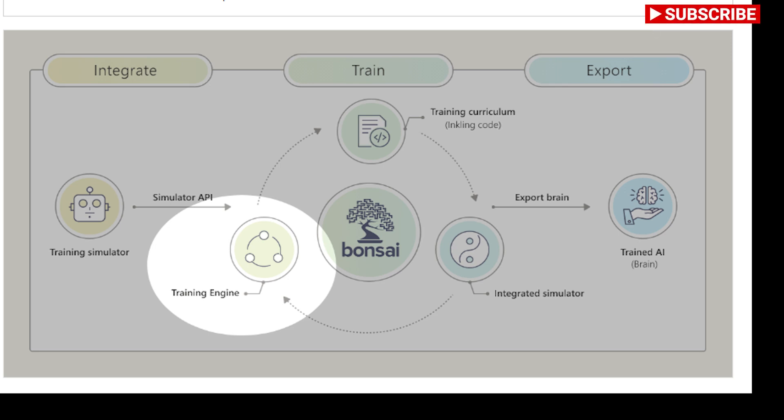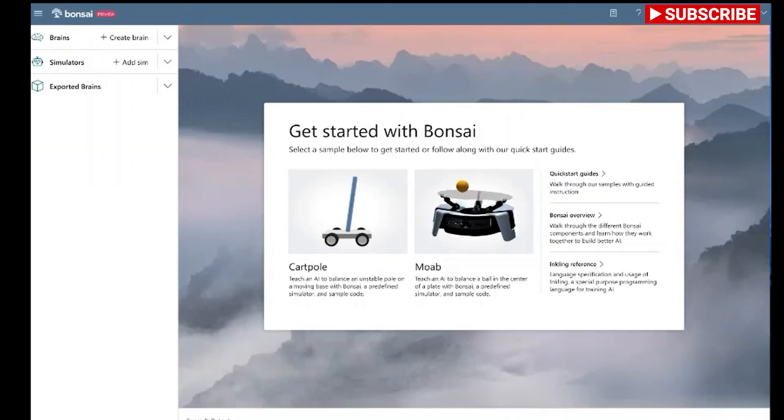Today I am going to talk about Microsoft Bonsai Project. This is Farhana and welcome back to my channel. Microsoft Project Bonsai is a low-code AI platform used to accelerate development for control systems that provide operator guidance or make independent decisions. Bonsai is part of the Microsoft Autonomous Systems Suite.